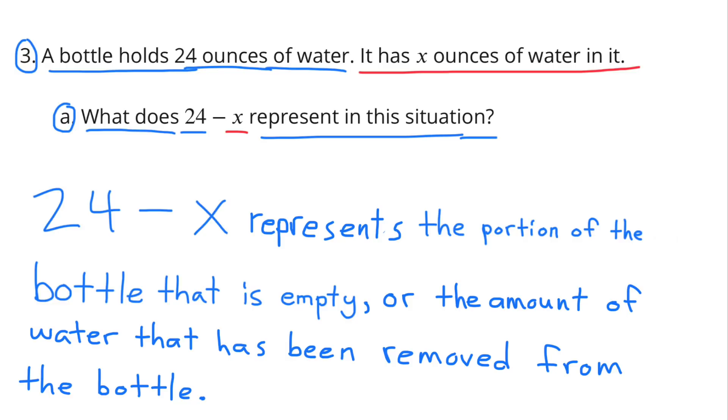Number 3. A bottle holds 24 ounces of water. It has X ounces of water in it. A. What does 24 minus X represent in this situation? 24 minus X represents the portion of the bottle that is empty or the amount of water that has been removed from the bottle.